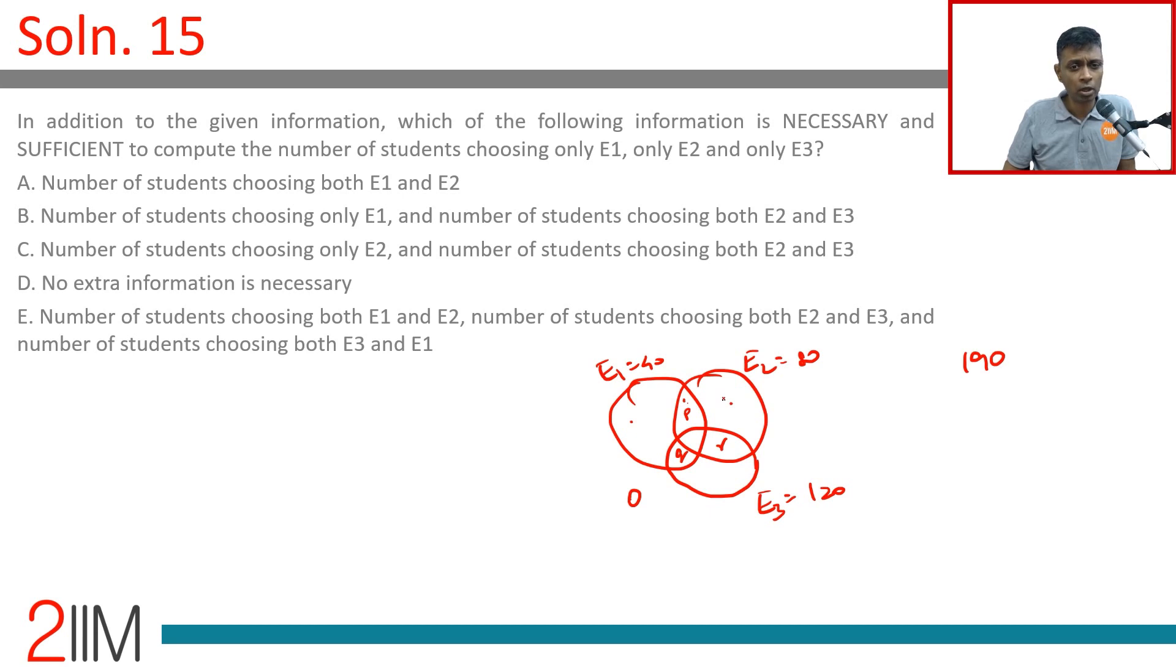Let's see, if we know that p plus q plus r is 50, if we know p but we do not know q and r individually, is there a mechanism to find q and r? That's what we're thinking about. Can we find q and r? Let's come back to choice B: number of students choosing only E1, and number of students choosing both E2 and E3.